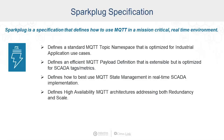Sparkplug defines a standard MQTT topic namespace that's optimized for industrial application use cases. It defines an efficient MQTT payload definition that's extensible but optimized for SCADA, tag, and metric representations. It defines how best to use MQTT state management in real-time SCADA implementations. And lastly, it defines some high-availability MQTT architectures addressing both redundancy and scale.